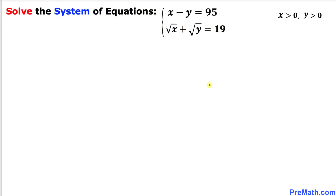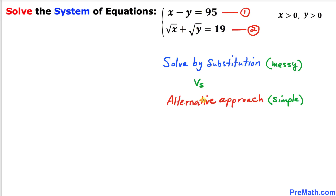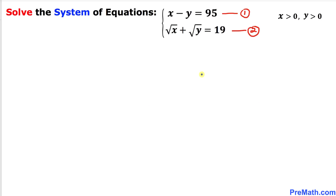Let's go ahead and get started with the solution. I'm going to label the first equation as equation number one and the second one as equation number two. We are going to solve these equations for x and y. We have a couple of options — one is the substitution method, but that's going to be really messy, so we'll take a different approach.